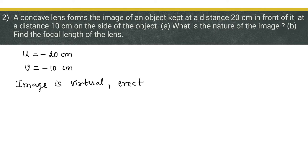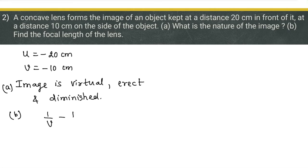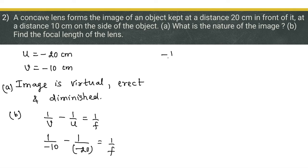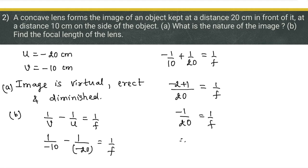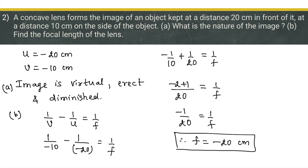The image is virtual, erect, and diminished. In part B, we find the focal length using the lens formula: 1/v - 1/u = 1/f. With v = -10 and u = -20: -1/10 + 1/20 = 1/f. LCM is 20, so (-2 + 1)/20 = -1/20 = 1/f. Therefore focal length f = -20 centimeters. The negative sign confirms it is a concave diverging lens.